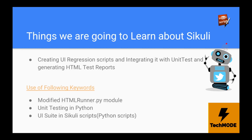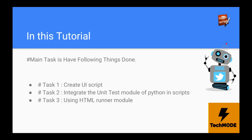We will be using HTML runner — it's a custom HTML runner that I have already modified with some Bootstrap styling. We will be using unit testing in Python, and the third piece will be the UI test suite we will be writing in Scully scripts. The major task is creating a UI script, integrating it with unit test, and using HTML runner to create an HTML report.